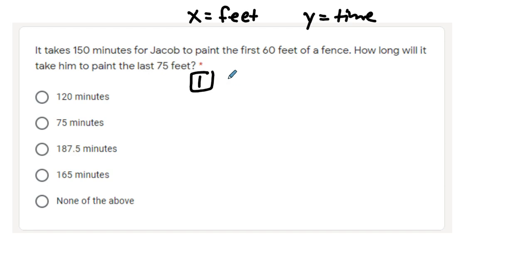First method is to solve using an equation, y equals kx. So it would be 150 equals k times 60. If you divide 150 by 60, you're going to get 2.5 equals k.